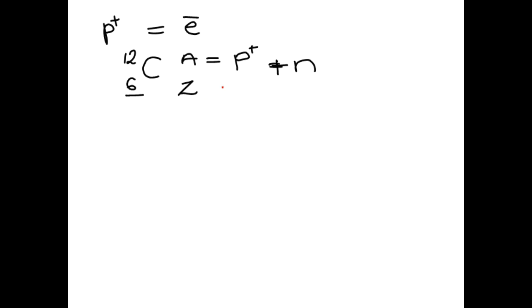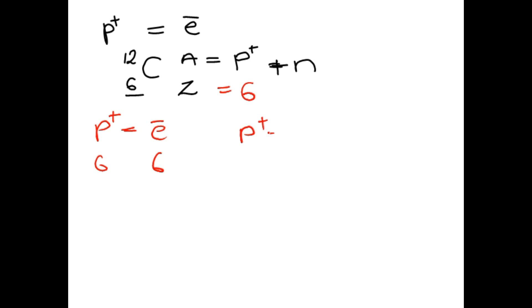Since Z equals 6, this means we have 6 protons. The number of protons is called the atomic number, denoted by Z. Since every atom has protons equal to electrons, carbon has 6 protons and 6 electrons. So: number of protons = 6, and number of electrons = 6.